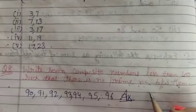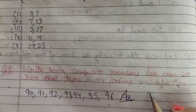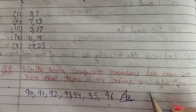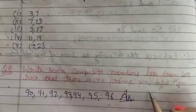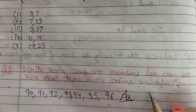Next, the question number is: write 7 composite numbers less than 100 such that there is no prime number between them. Condition: we have to think about 7 composite numbers. So this number is less than 100.